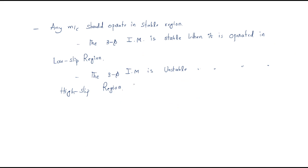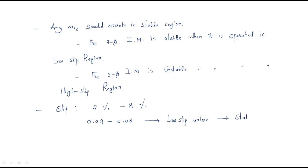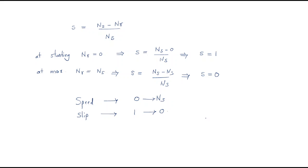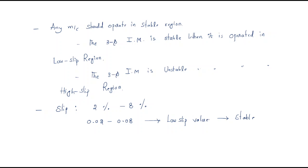We already discussed that the slip of an induction motor is typically two percent to eight percent — that is, 0.02 to 0.08. The reason is that these are low slip values, and in the low slip region the motor operates in stable mode. If the slip value is high, the motor is in unstable mode. These are the torque-slip characteristics of the three-phase induction motor.